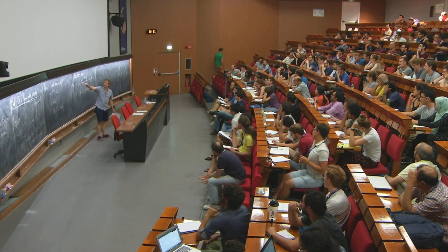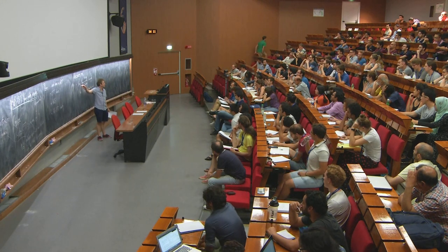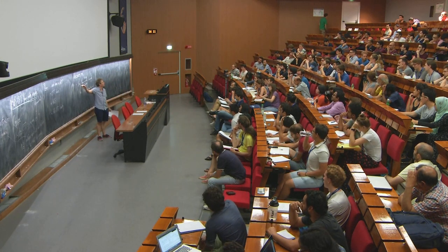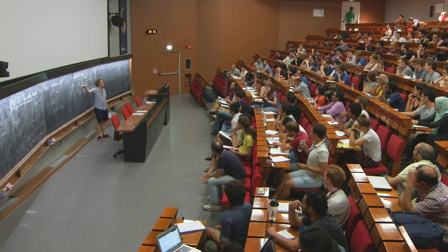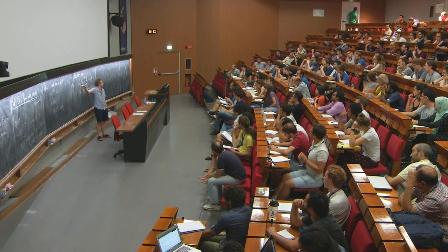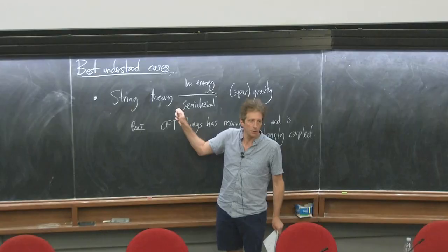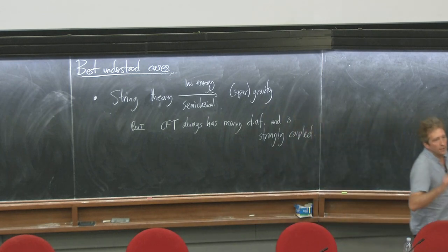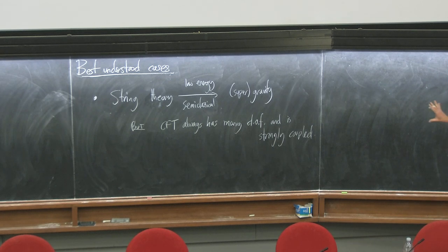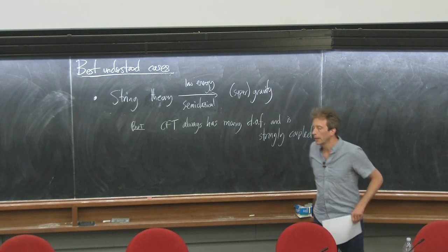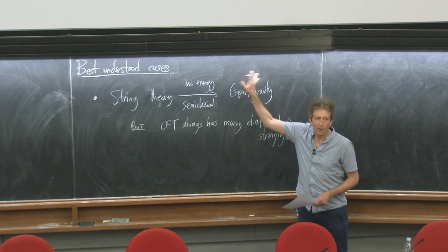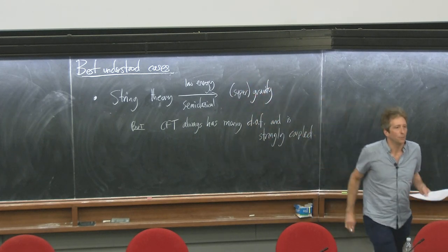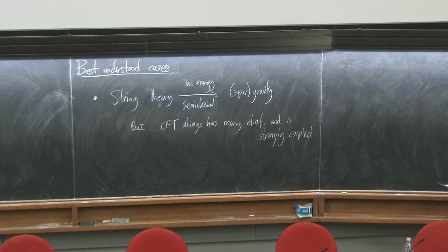In string theory there are two expansions - the string length scale and the string coupling (or from a low energy point of view, the Planck scale). You need to be semi-classical with respect to the Planck scale and low energy with respect to the string scale. So there are basically two things you need to tune in order to get to this gravity limit where you have some control and it really looks like a classical or semi-classical gravity theory.